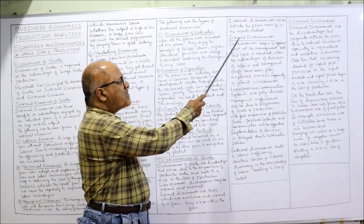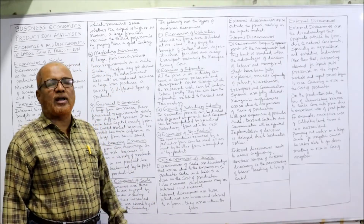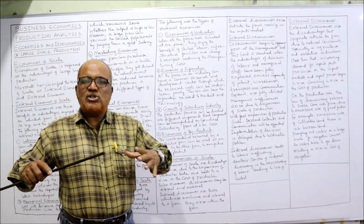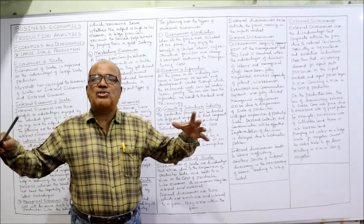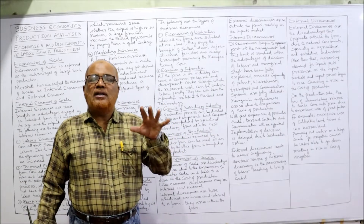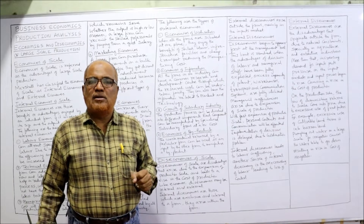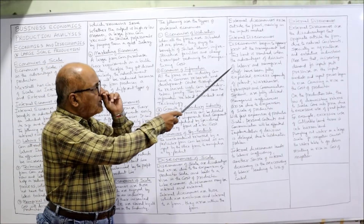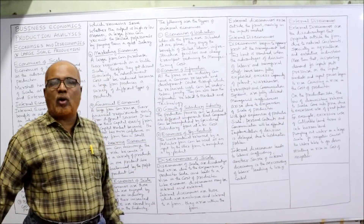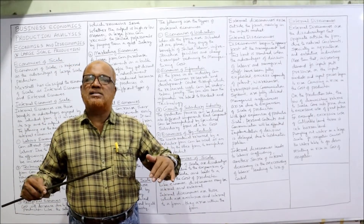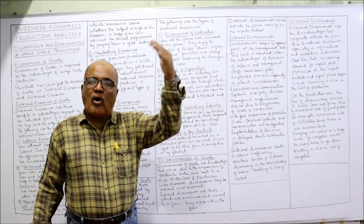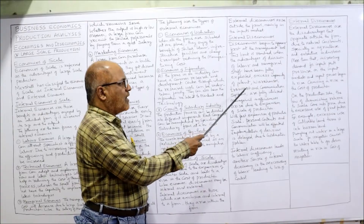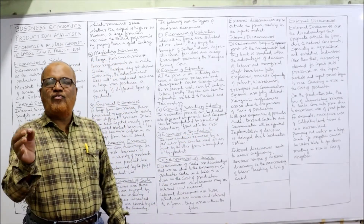First we discuss internal diseconomies — within the same organization. Diseconomies begin to appear first at the management level. When the business produces goods on large scale, the first problem arises at the management level — it becomes difficult for management to control and manage the business because it has grown to such a vast scale. This limit is reached when the advantages of division of labor and managerial skill have been fully exploited and excess capacity of plant, warehousing, and transport are fully utilized.